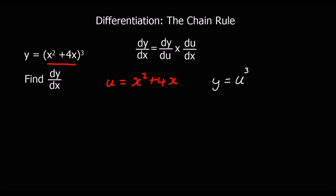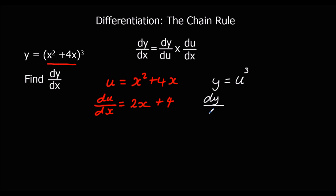So let's do that. We've got du/dx: we're going to multiply by the power and then take one off the power — normal differentiation — giving us 2x plus 4. And dy/du will be 3u squared.